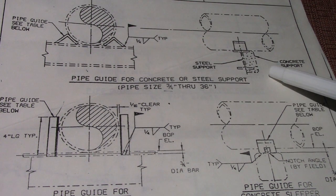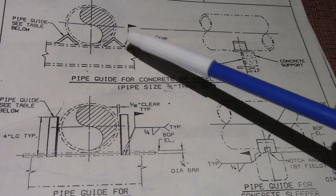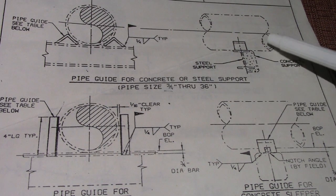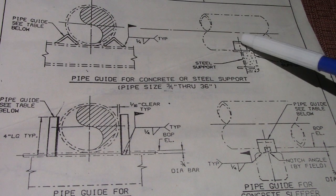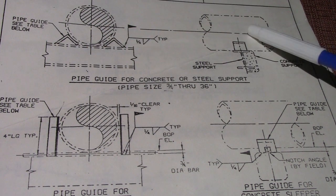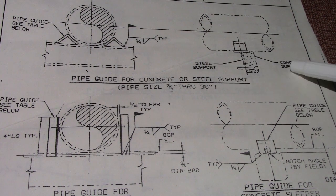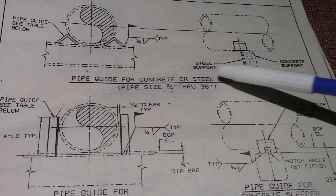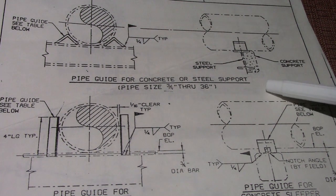This is the side view and this is the front view. This is the side view and this is guide F5, also showing the I-beam — concrete support and steel support.